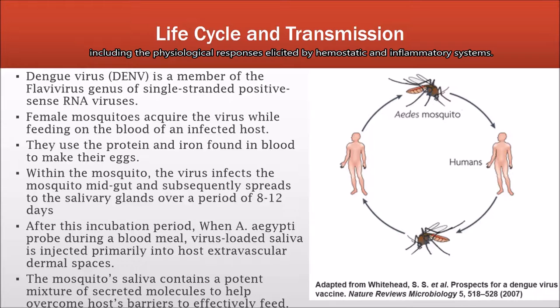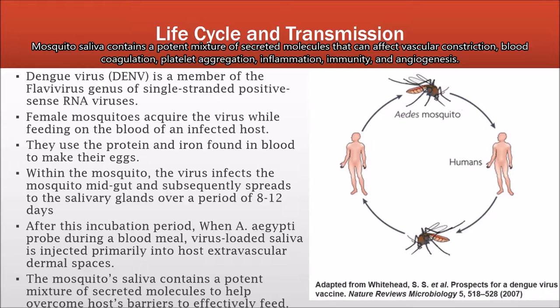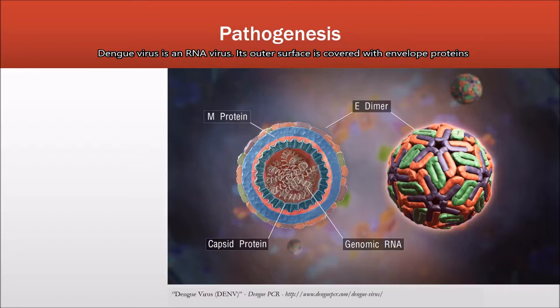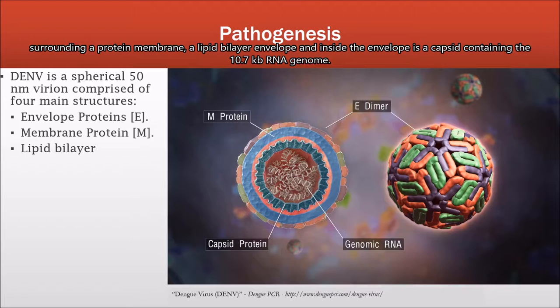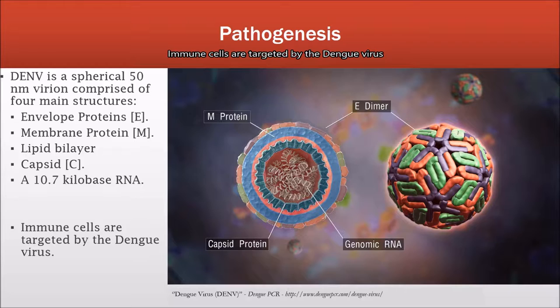To efficiently feed, the mosquito must overcome host barriers, including the physiological responses elicited by homeostatic and inflammatory systems. Mosquito saliva contains a potent mixture of secreted molecules that can affect vascular constriction, blood coagulation, platelet aggregation, inflammation, immunity, and angiogenesis. Dengue virus is an RNA virus whose outer surface is covered with envelope proteins surrounding a protein membrane, a lipid bilayer envelope, and inside the envelope is a capsid containing the 10.7 kilobase RNA genome.